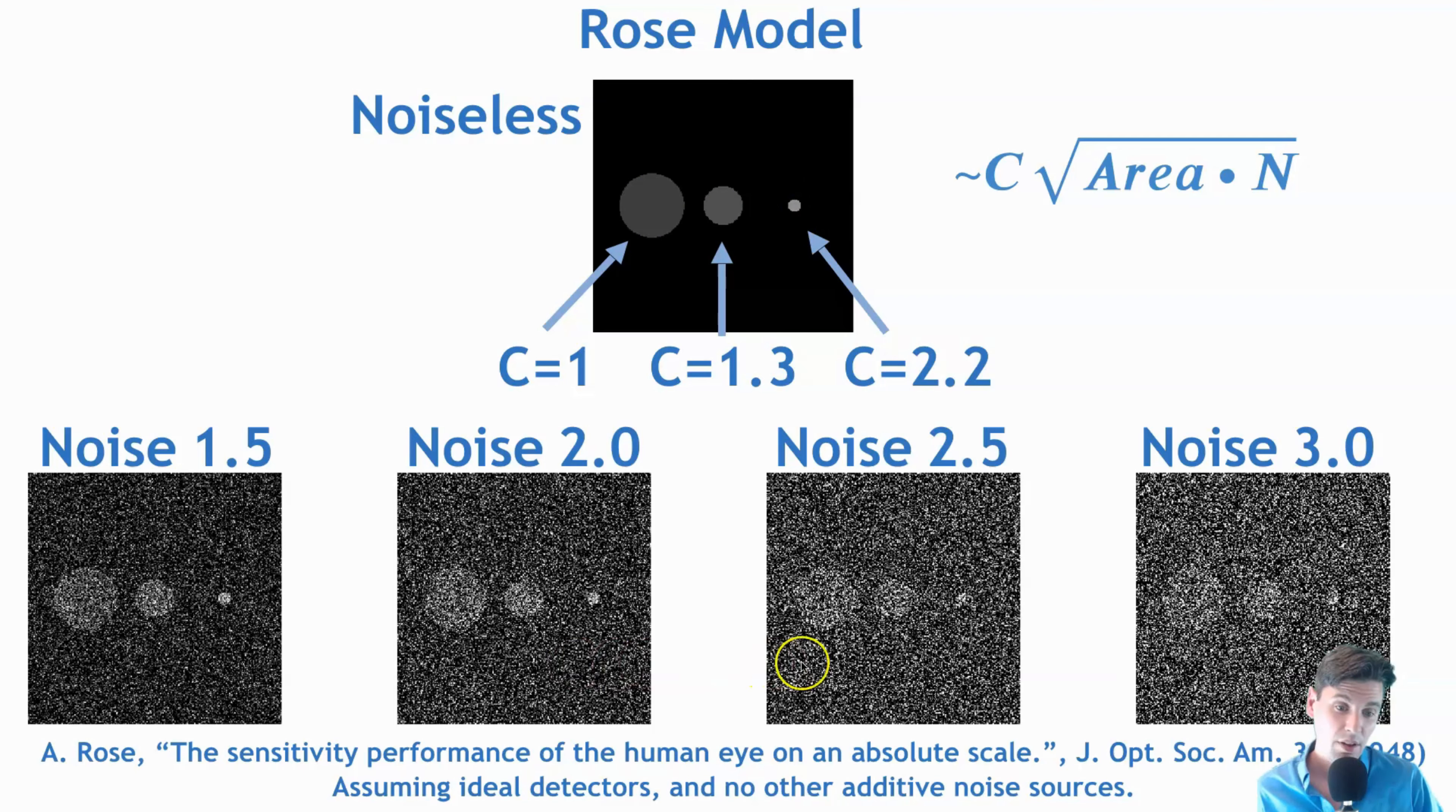As we go to these more noisy scenarios, so a lower contrast to noise ratio, because we're keeping the contrast fixed in these cases. And as we go to that more noisy scenario, you can see now, our ability to visualize these objects is similar. So I can still visualize the small objects, even when I can visualize the kind of medium sized objects, because we have a higher contrast within the objects.